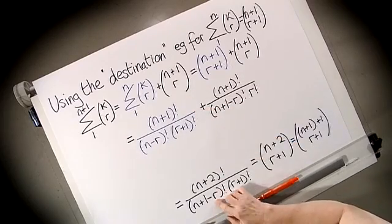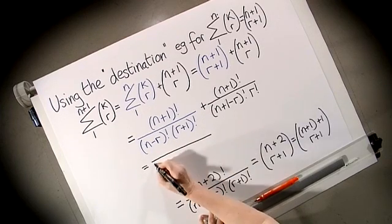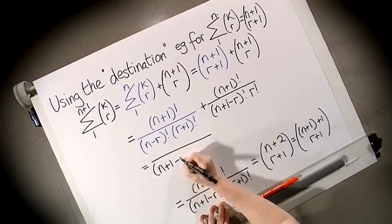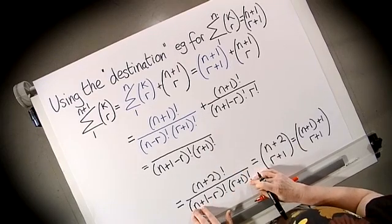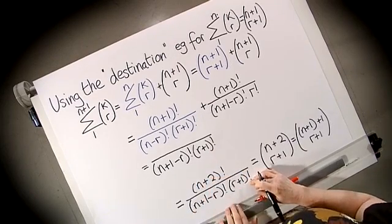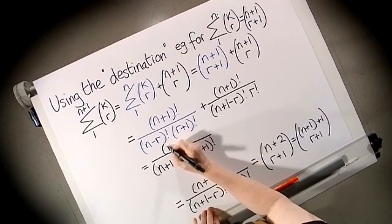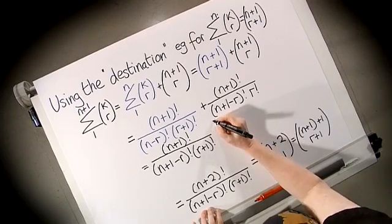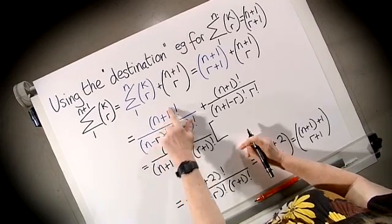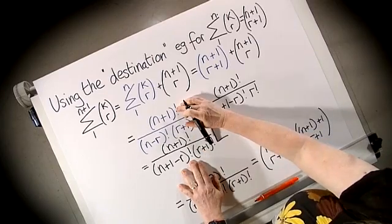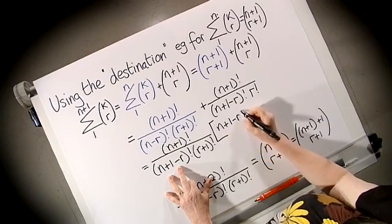You could look at these expressions here and think what on earth do I do next but if you look at the destination you know what you need on the bottom. So the next stage we know that we need to have (N+1-R) factorial times (R+1) factorial on the bottom of our fraction. We can't sort the top out at the moment but we can look at what we already have and both our expressions at the moment have (N+1) factorial on the top so we simply need to work out what we multiply this fraction by to keep our equality here. If you compare this fraction with this one you'll discover we've got an extra term on the bottom so we need to multiply by that term on the top. Likewise compare this term with the expression here and you'll find we've got an extra R+1 on the bottom so we need that on the top.